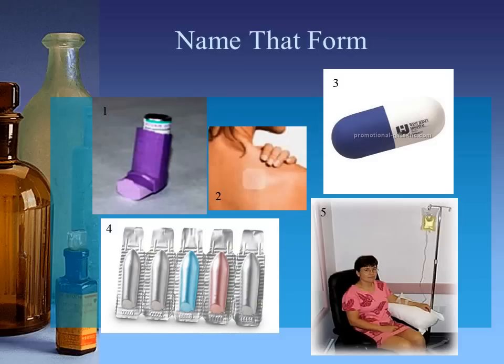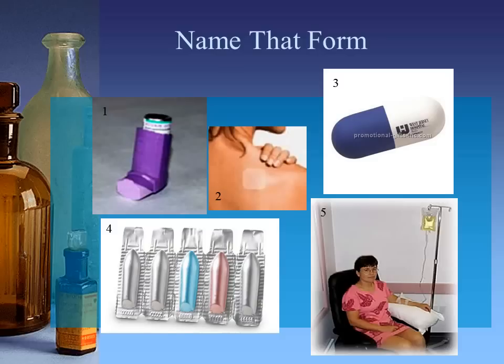Let's see how you did. Number five is an intravenous medication being delivered. Number four is suppositories — they usually come in foil, and one thing we always have to remind patients is that they must take them out of the foil, as it will not absorb through the foil into the body. Number three is a capsule. Number two is a transdermal patch. Number one is probably the trickiest — you may recognize it as an inhaler, but the actual form is a powder. What is inside that canister is a powder, and when it is compressed it is mixed with air, and then the powder is what is inhaled into the lungs.